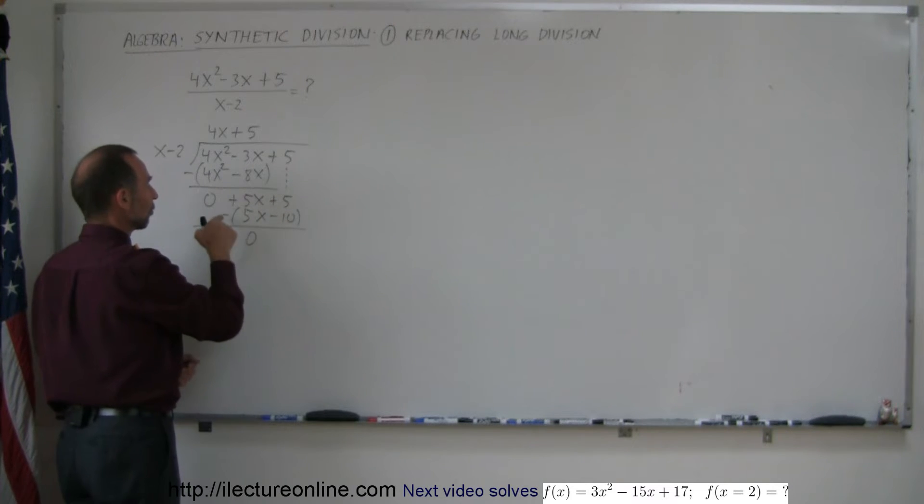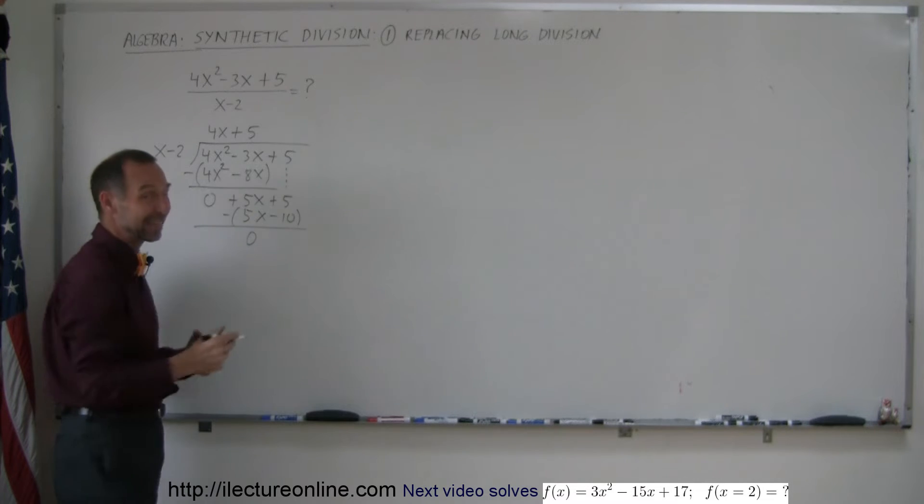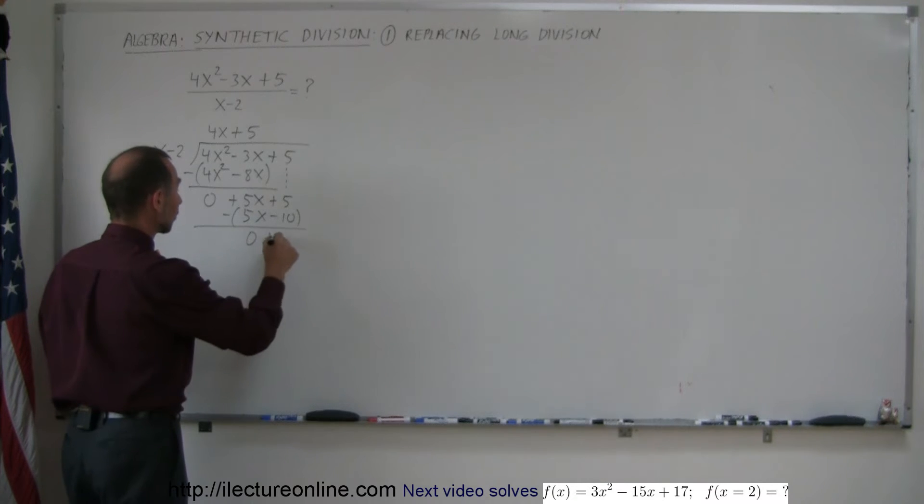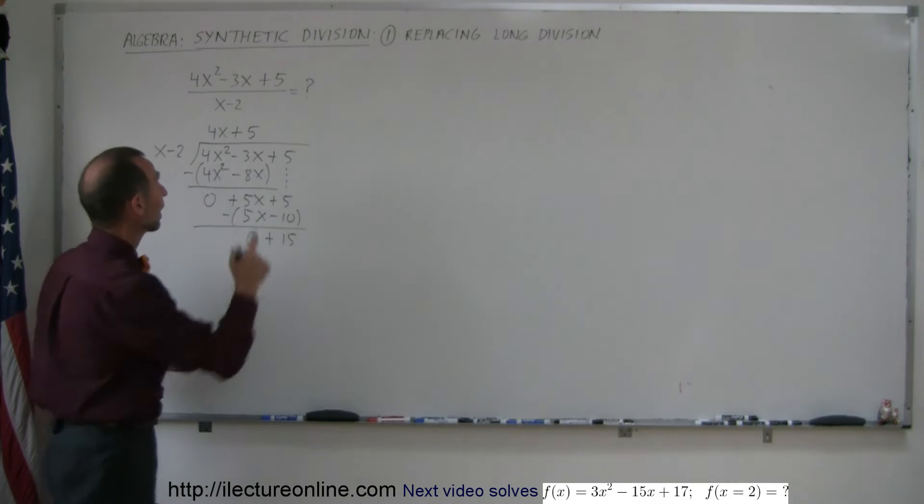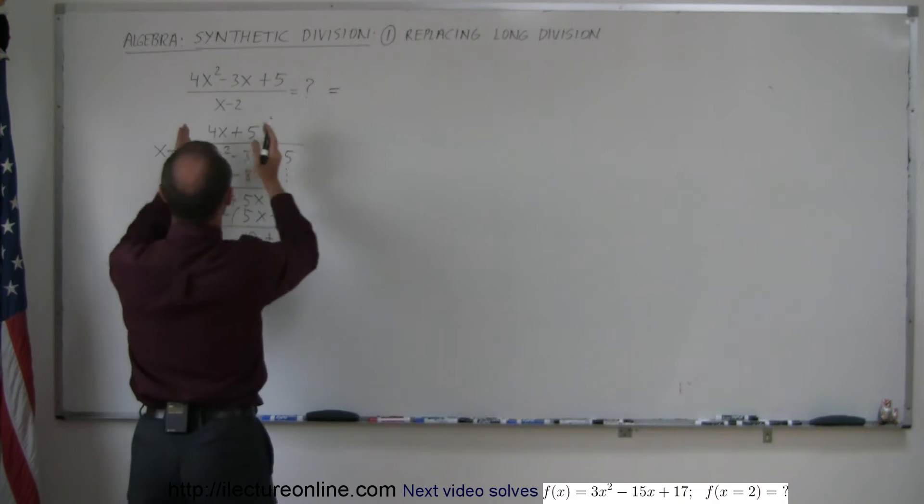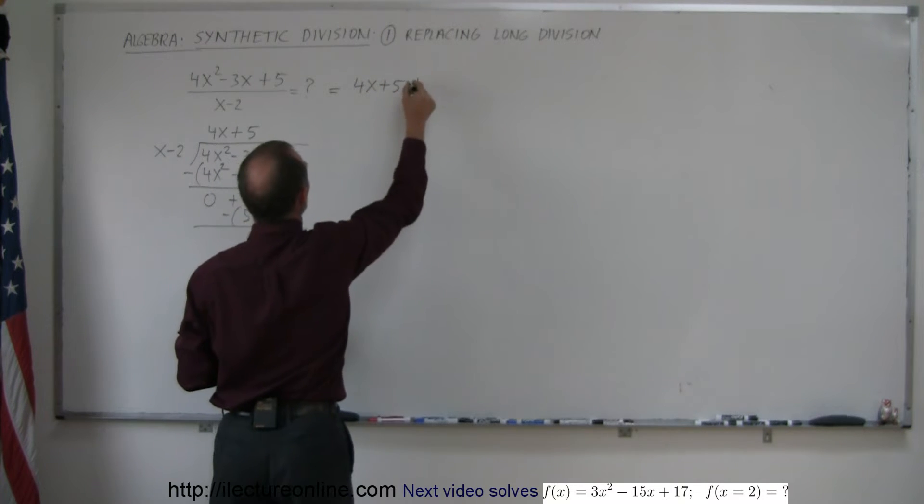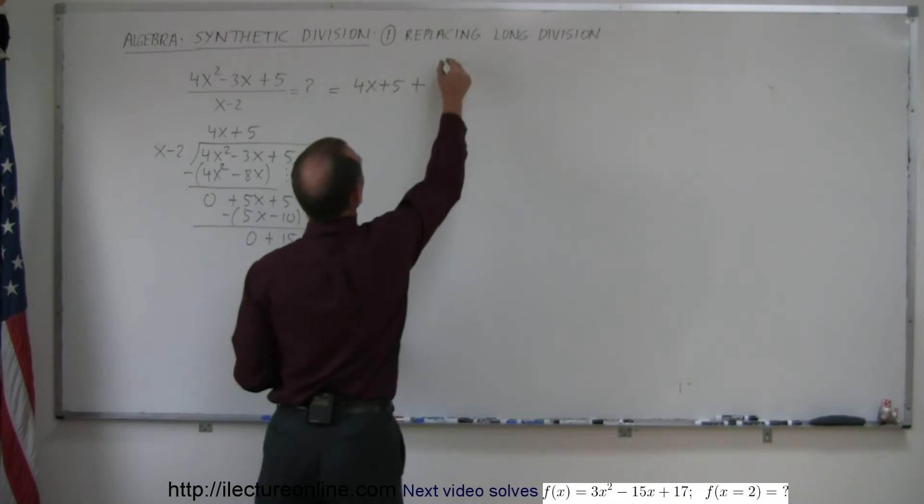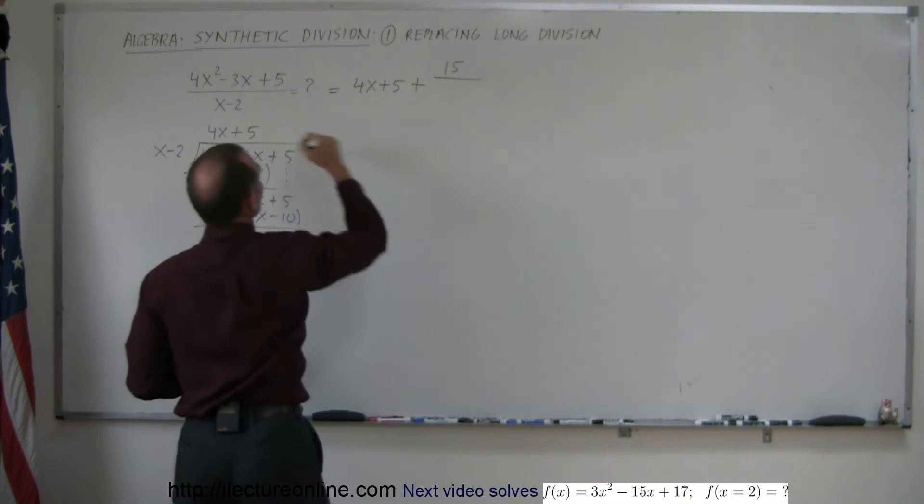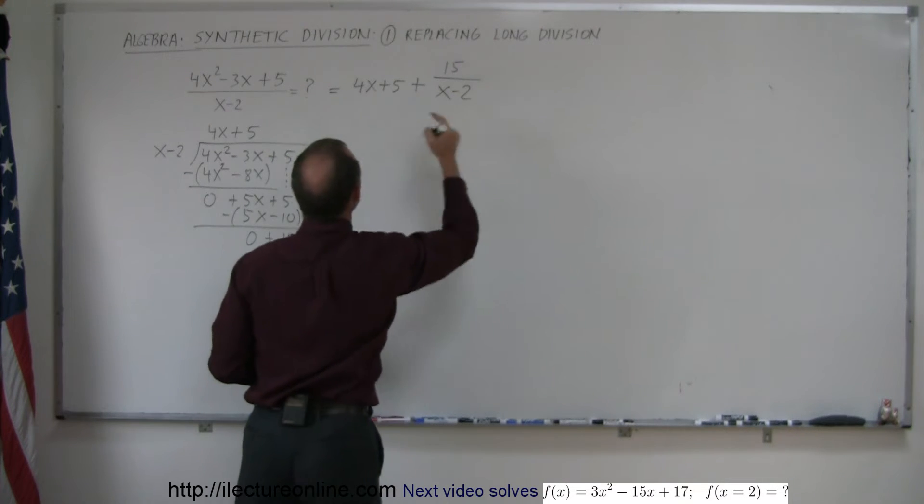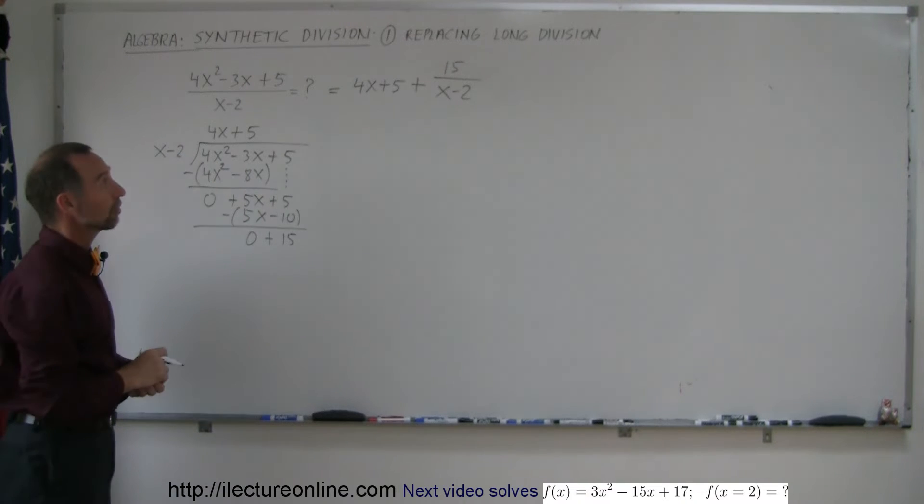And this minus this, of course, we subtract a negative number. That's like adding a positive number. So we get plus 15, which is the remainder. And so what that means is that this division is equal to 4x plus 5 plus the remainder, 15, divided by the divisor, which is x minus 2. And that's how we do long division.